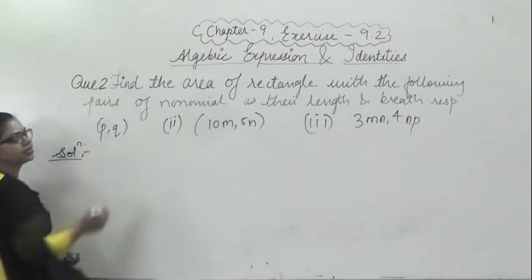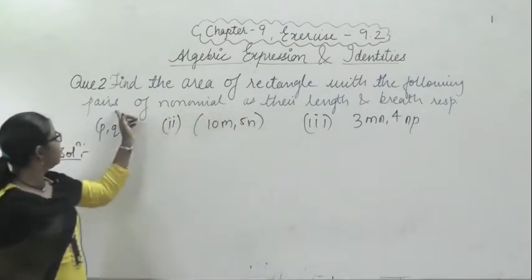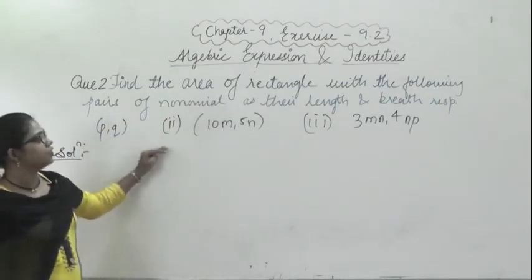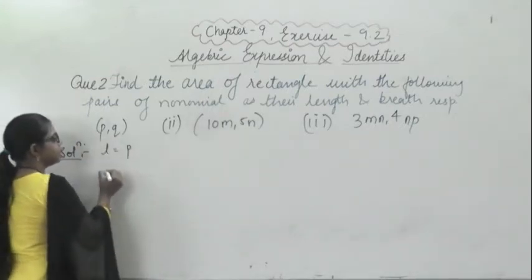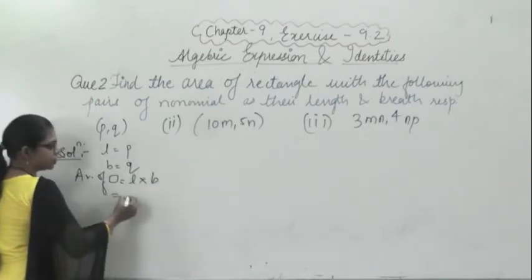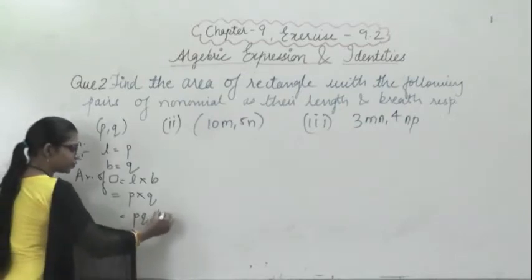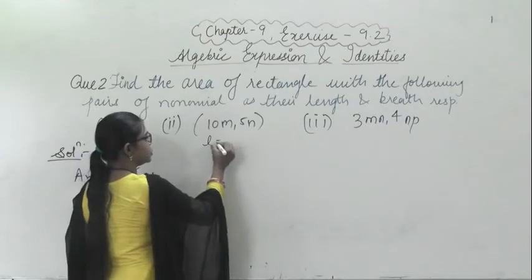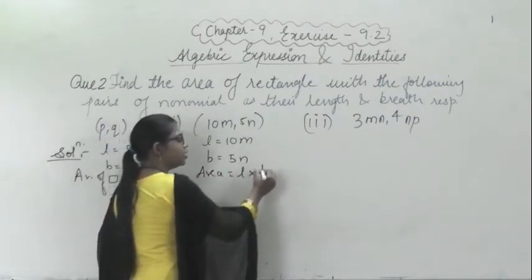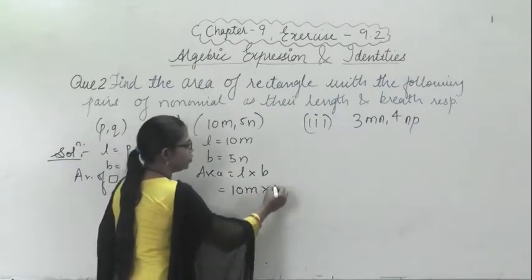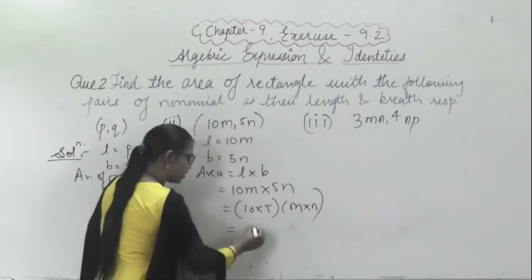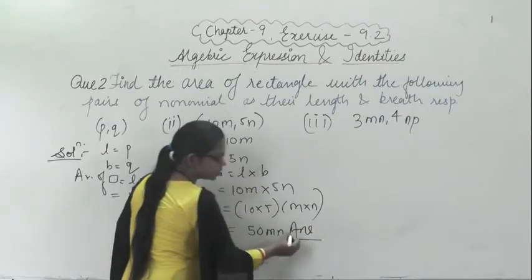This is part 2. In this question it says: find the area of the rectangle with the following dimensions given as monomials. Here, suppose length is 10m and breadth is 5m. Area is equal to length into breadth. So 10m into 5m — I can write this as 10 into 5, m into m. So 5 tens are 50, m into m is m squared. The answer is 50m squared.